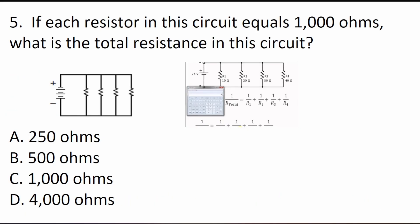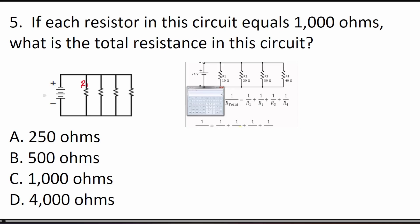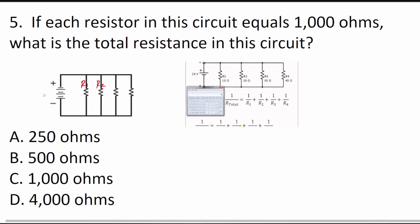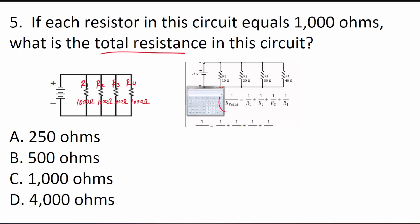Question 5 asks: if each resistor in this parallel circuit equals 1,000 ohms, what is the total resistance? This is a parallel circuit with four resistors — R1, R2, R3, and R4 — each with 1,000 ohms of resistance. To calculate total resistance in a parallel circuit, we use the formula: 1/R_T = 1/R1 + 1/R2 + 1/R3 + 1/R4.